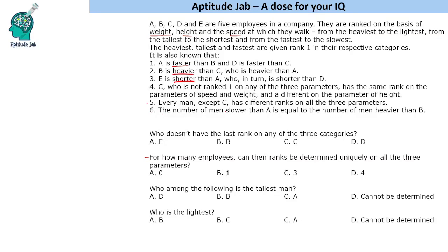Statement six says the number of men slower than A equals the number of men heavier than B — so it mentions speed of A and weight of B. Statements one, two, and six together mention A's speed and B's weight, so we'll combine these to find the possible cases.